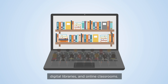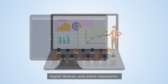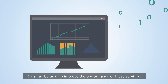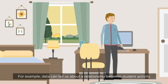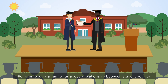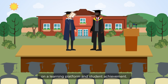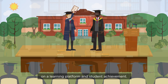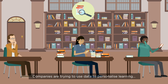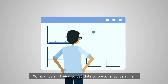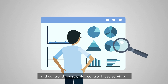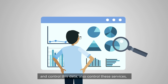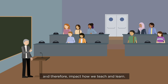In edtech, data underpins services such as learning platforms, digital libraries, and online classrooms. Data can be used to improve the performance of these services — for example, data can tell us about the relationship between student activity on a learning platform and student achievement. Companies are trying to use data to personalize learning, but this also means that the platforms who collect, process, and control this data also control these services, and therefore impact how we teach and learn.